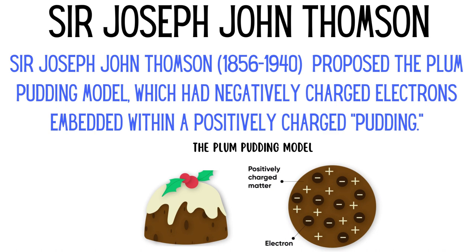In order to have a deeper understanding about Rutherford's experiment, we would have to talk about another great scientist, J.J. Thomson. Sir Joseph John Thomson, 1856 to 1940, proposed the Plum Pudding Model, which had negatively charged electrons embedded within a positively charged pudding. Below is an example of the Plum Pudding Model.